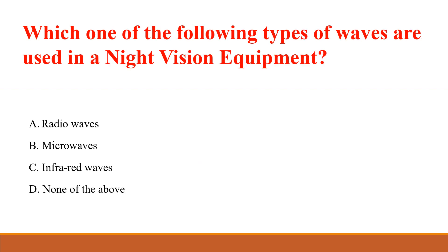Which one of the following types of waves are used in night vision equipment? Answer: C. Infrared waves.